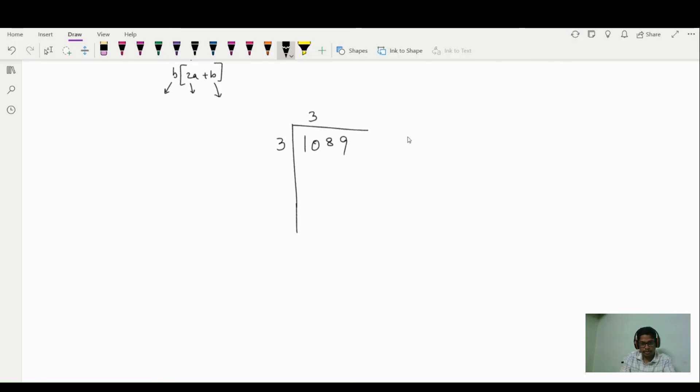So 1089, we'll group from the right. When I group, I take two digits at a time. So 89 becomes one group and 10 becomes a second group. Now I see this group, that is 10, from the left. And then I write a number that is near this 10 and a perfect square. The number closer to 10 and a perfect square, which is less than 10, is 9 and 9 is 3 into 3. So I just write 3 times 3 and I write 9 here.